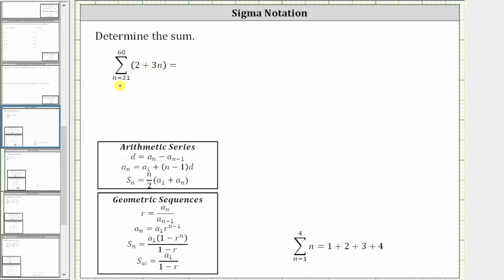But let's go ahead and generate some of the terms of this series. Notice how the first value of n is 21 and therefore the first term is two plus three times 21. The next value of n is 22 and therefore the next term is going to be two plus three times 22. The next value of n is 23 and therefore the next term is two plus three times 23.